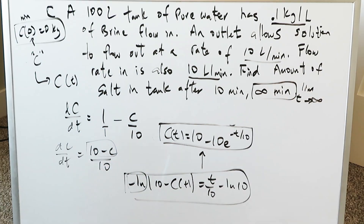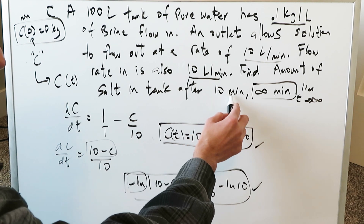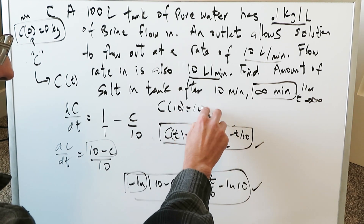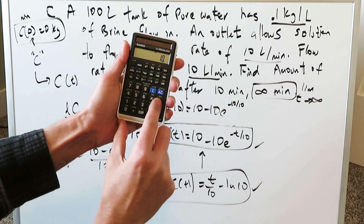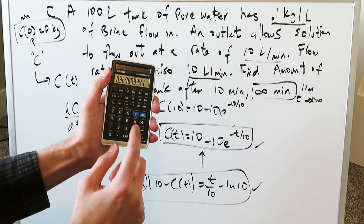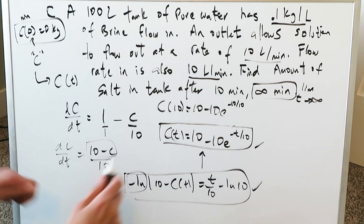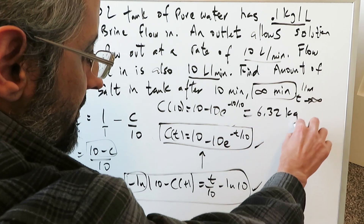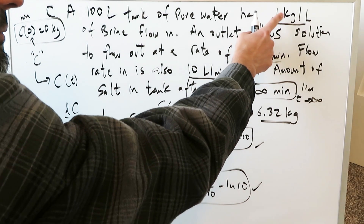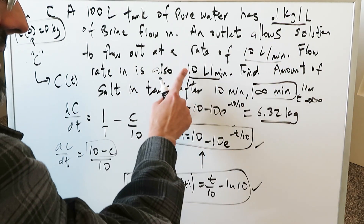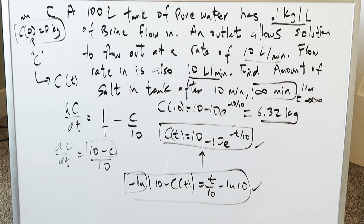Now for the evaluation questions. The concentration at t = 10 minutes: c(10) = 10 - 10·e^(-10/10) = 10 - 10·e^(-1). Computing: 10·e^(-1) ≈ 3.68, so c(10) ≈ 6.32 kilograms. After 10 minutes of brine at 0.1 kg/L flowing in at 10 L/min with the same exit rate, there are 6.32 kilograms of salt in the tank — we have concentrated 6.32 kilograms of salt into that water.